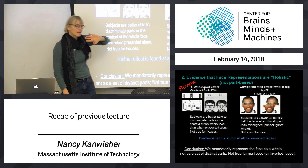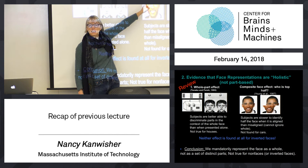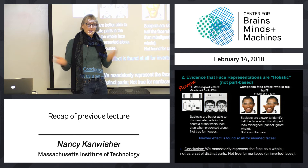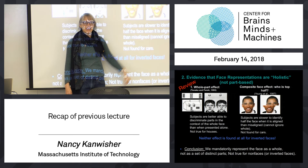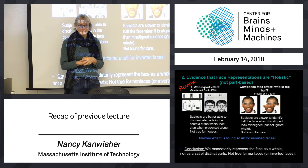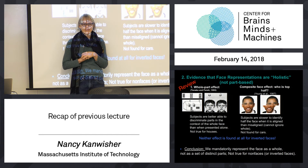That was the part-whole effect. A similar idea but different design is the composite effect: if you ask people to identify just part of a face — in this case the top of the face — people are distracted, confused, slowed down, and make more errors when it's aligned versus misaligned. That's because your system just isn't set up to process only the top — it wants to do the whole thing. That effect is found for faces but not cars, showing this is something specific about faces. And again, the beautiful control condition: that effect is not found for inverted faces.